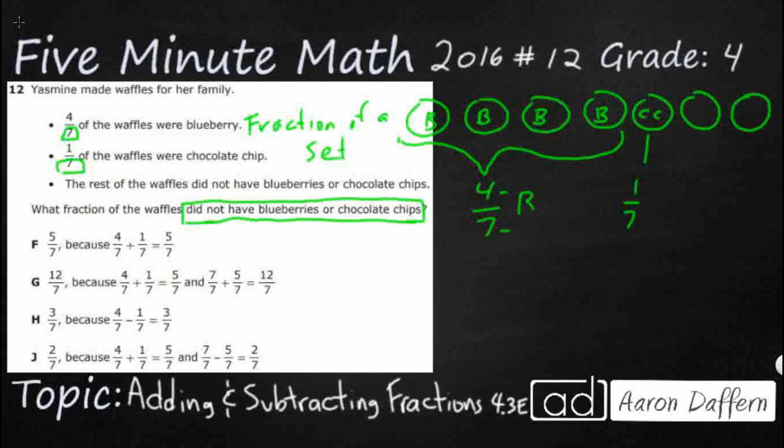I'll put a B right here, put a CC right here. If we're looking at our picture, it seems pretty simple. How many did not have blueberries or chocolate chips? Well, we can see that there are two left. Two sevenths are, we'll just call them mystery. We don't know what they are.